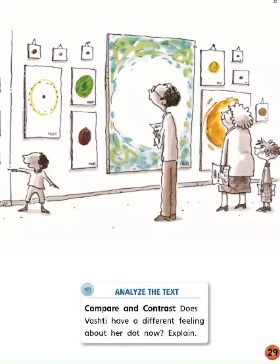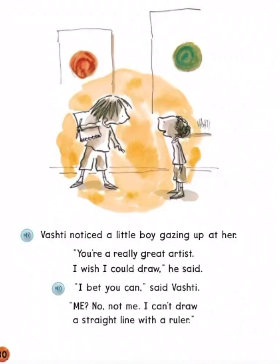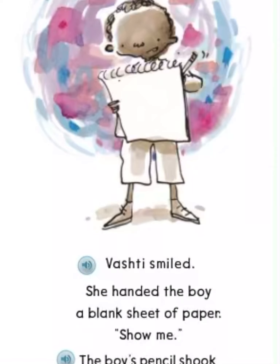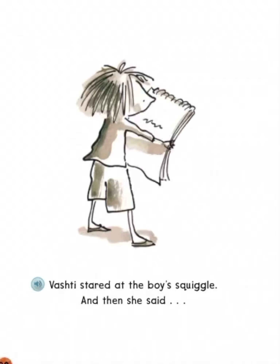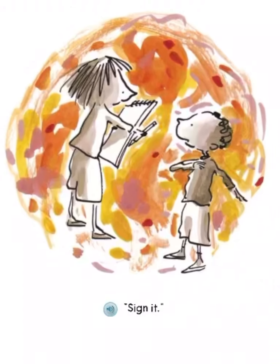Analyze the text — compare and contrast: does Vashet have a different feeling about her dot now? Explain. Vashet noticed a little boy gazing up at her. 'You are a really great artist. I wish I could draw,' he said. 'I bet you can't,' said Vashet. 'Me? No, not me. I can't draw a straight line with a ruler.' Vashet smiled. She handed the boy a blank sheet of paper. 'Show me.' The boy's pencil shook as he drew his line. Vashet stared at the boy's squiggle, and then she said, 'Sign it.'